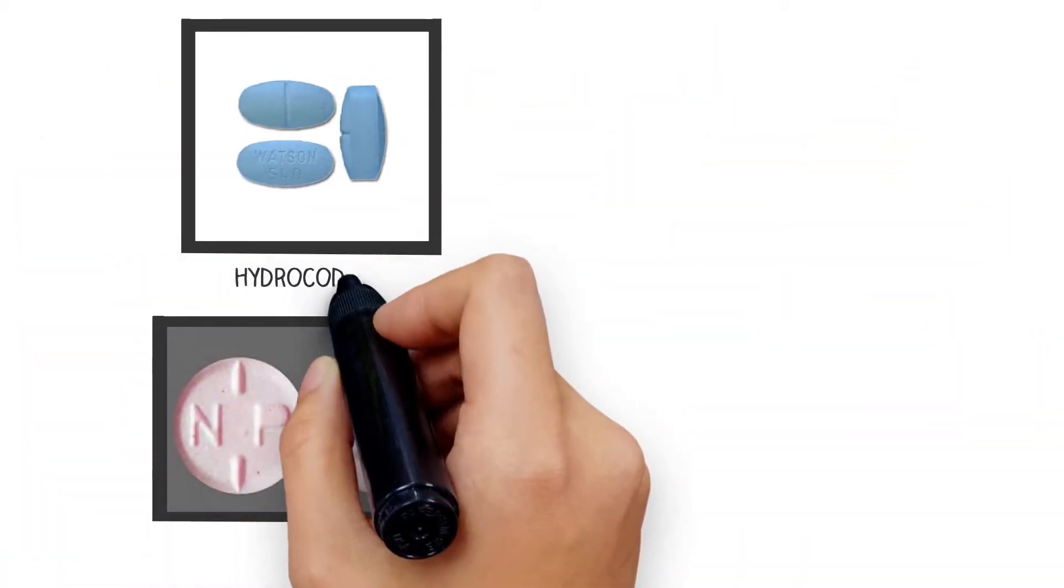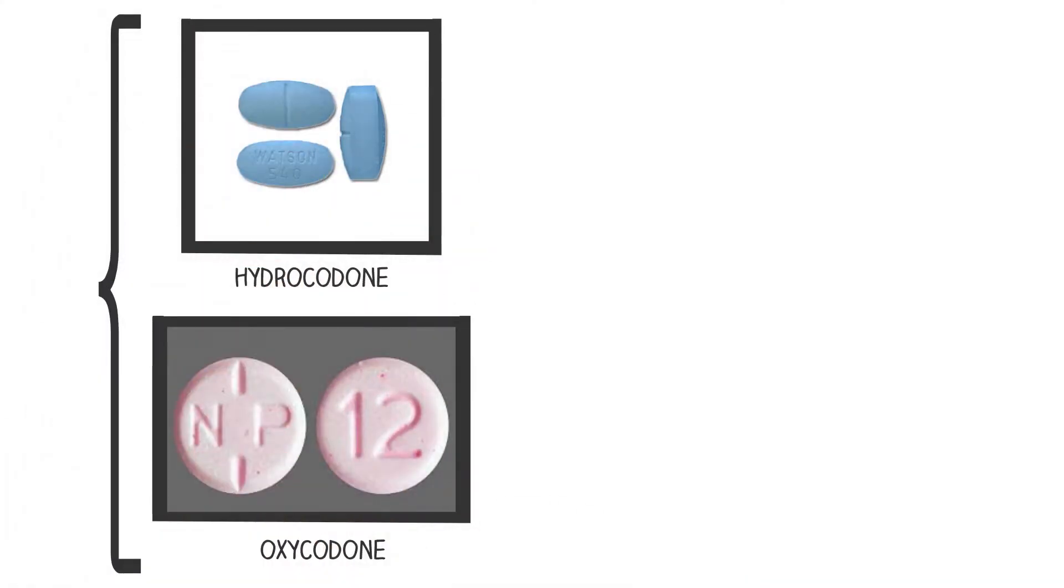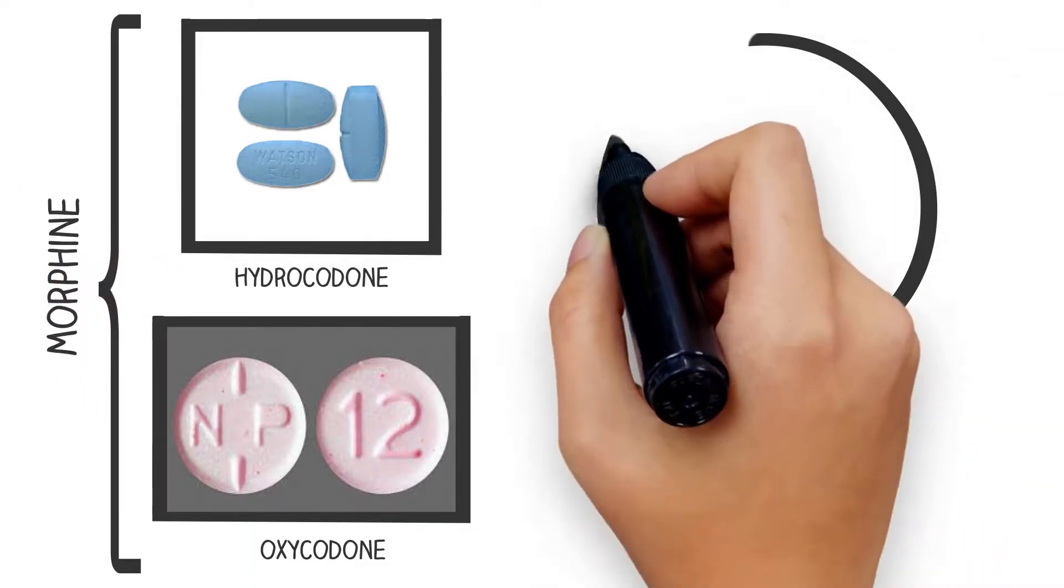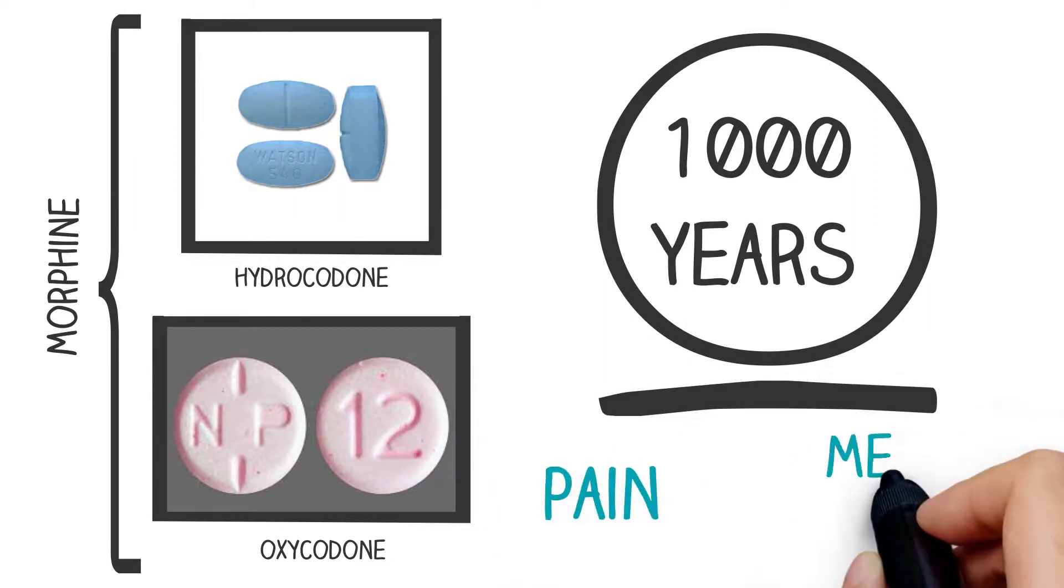Opioid pain medications, such as hydrocodone or oxycodone, are any pain medications that are structurally or functionally related to morphine. These medications have been used for thousands of years in the treatment of pain and mental illness.